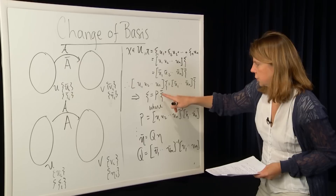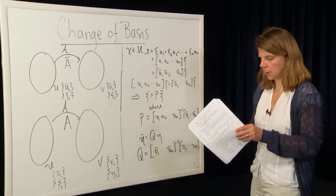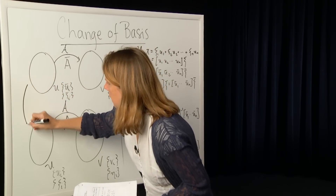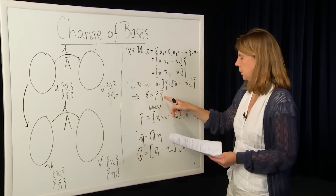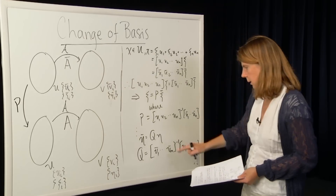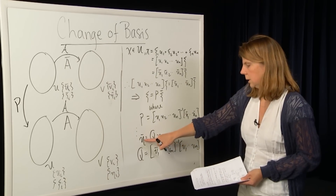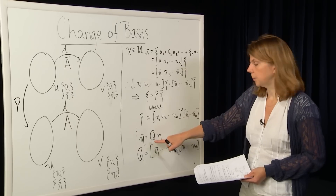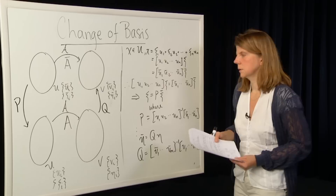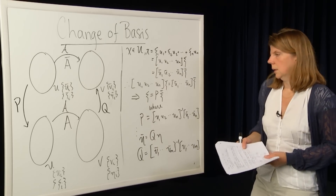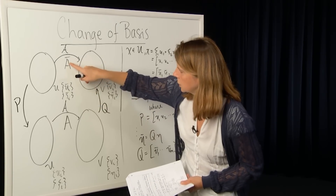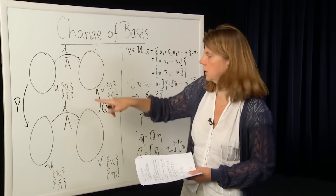I have a relationship between xi and xi bar. Going back to my diagram, if I take the vectors xi bar and pre-multiply by the matrix P, I get the coordinates xi. Similarly, if I take the coordinates eta and pre-multiply by the matrix Q, I get the coordinates eta bar. That gives me basically the rule for transforming between the matrix representation A and the matrix representation A bar.